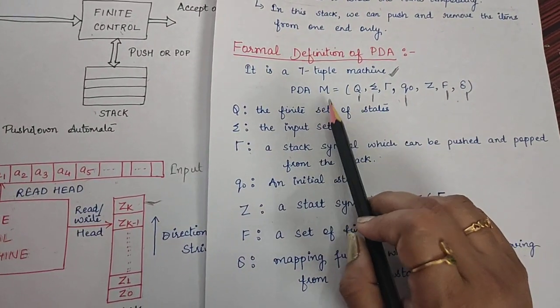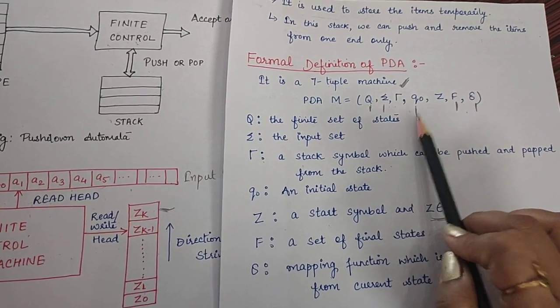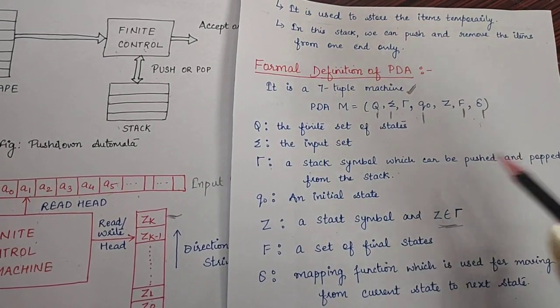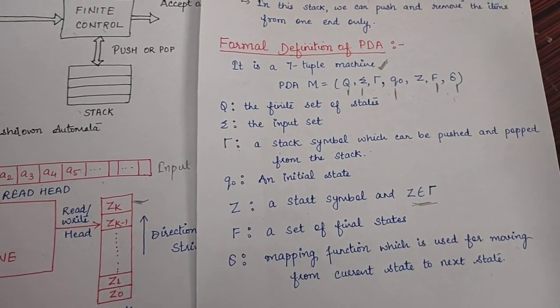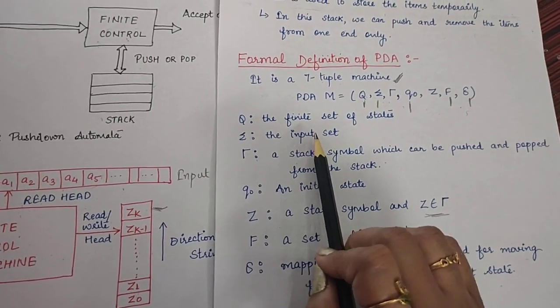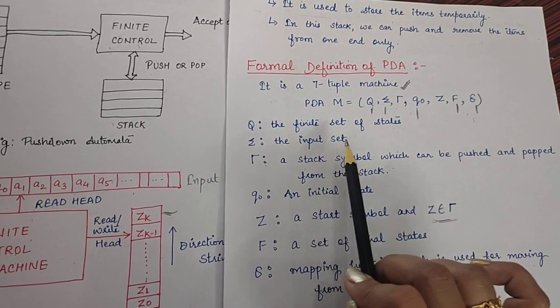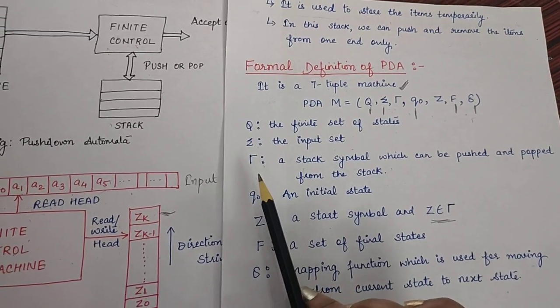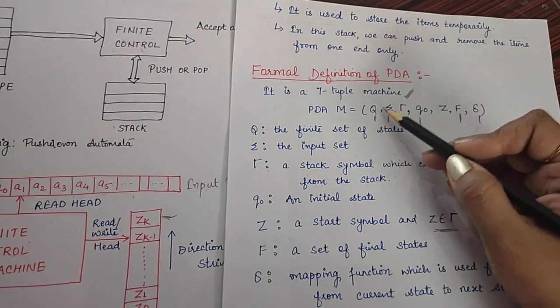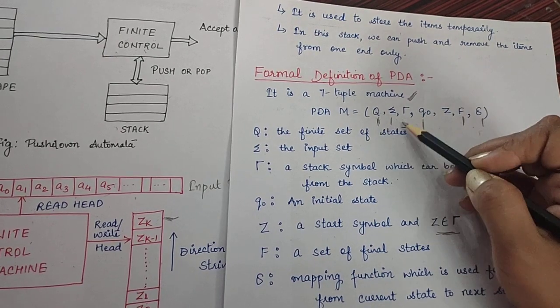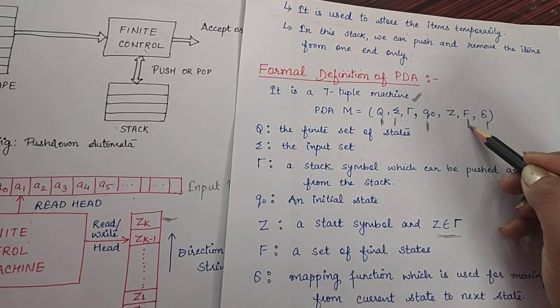In this 7-tuple list, we are having Q, sigma, tau, Q0, Z, F, delta. Few symbols to which we are very much familiar in case of deterministic finite automata. Here Q is a finite set of states. Sigma is input set. Q0 is the initial state. F is a set of final states.